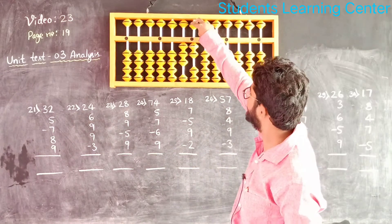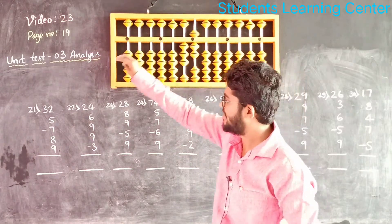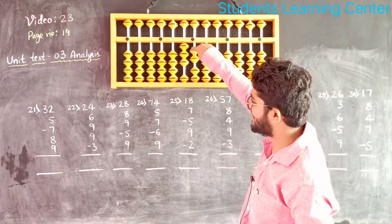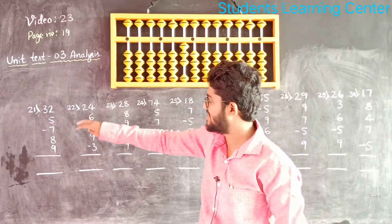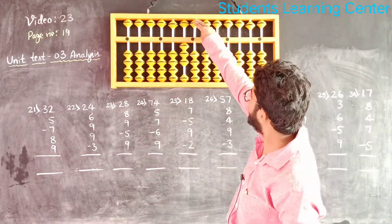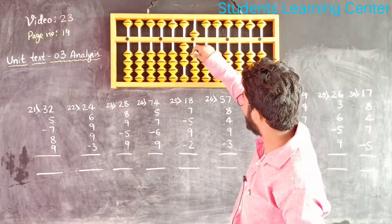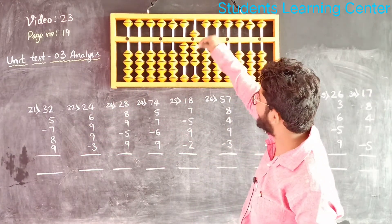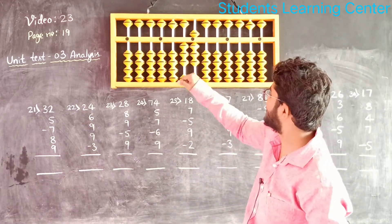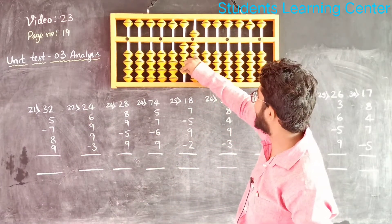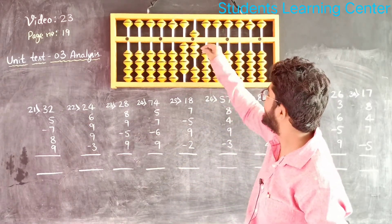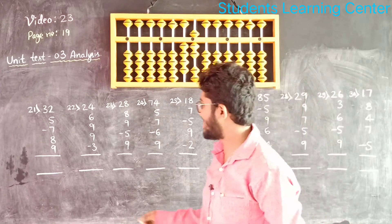Add 9, add 9, add 10 less 1. 47 is the answer.